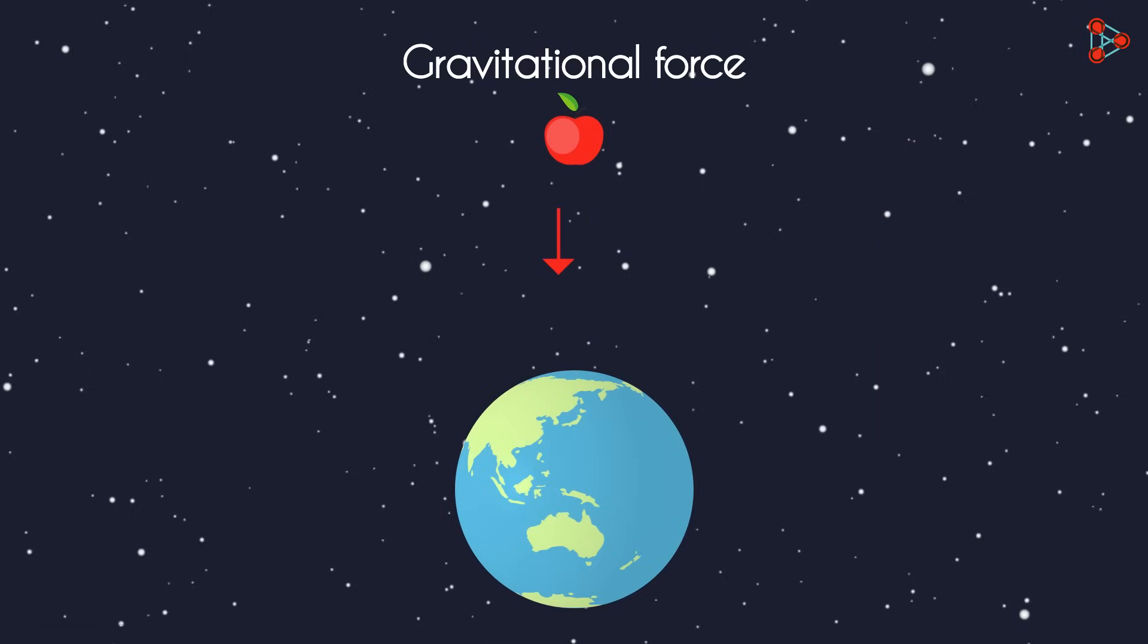So does the apple fall towards the earth or does the earth move towards the apple or do both move towards each other?